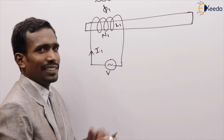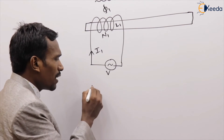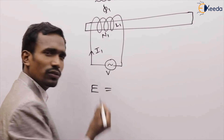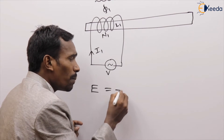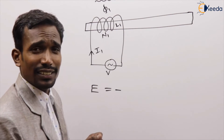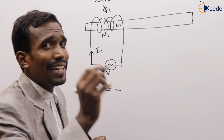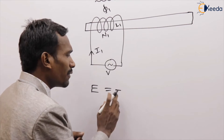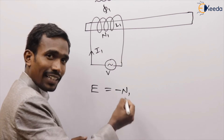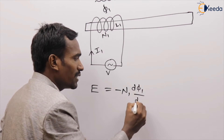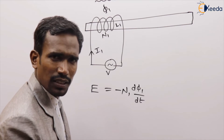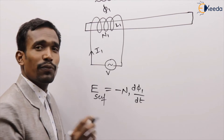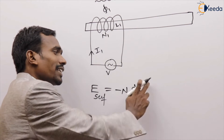Now flux phi1 is there. Generally, when flux cuts with number of turns, it produces EMF. That EMF is equals to minus N into dφ by dt, according to Faraday's second law. This is the EMF induced in this coil, also known as self-induced EMF: equals to minus N into dφ by dt.